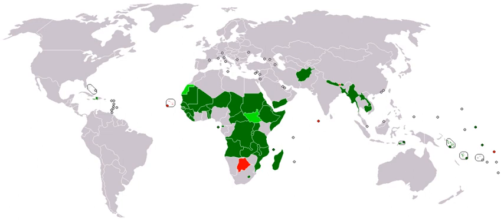There is criticism for using the term 'developing country.' The term could imply inferiority compared with a developed country. It could assume a desire to develop along the traditional Western model of economic development, which a few countries such as Cuba and Bhutan choose not to follow. Alternative measurements such as gross national happiness have been suggested as important indicators. International organizations have started to use the term 'less economically developed country' for the poorest nations, which can, in no sense, be regarded as developing.